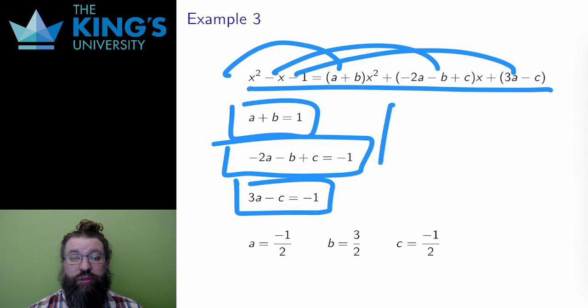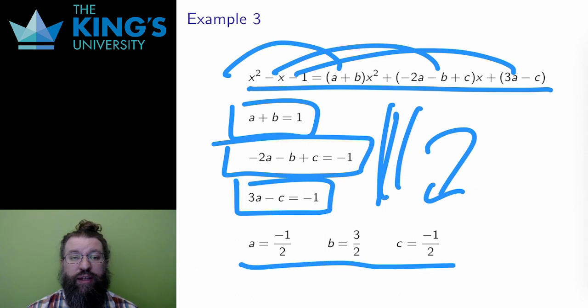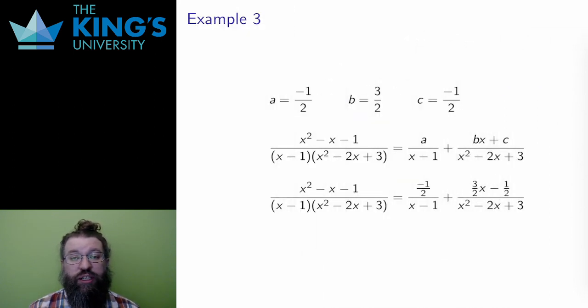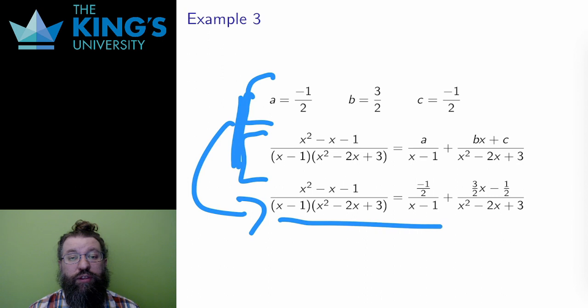This is a system of equations. And again, I've asked the computer to do the system of equations for me. The result is a is negative 1 half, b is 3 halves, and c is also negative 1 half. Well, now I have the unknowns, and this was the decomposition I expected. So I insert the values for a, b, and c from the system to produce this result.